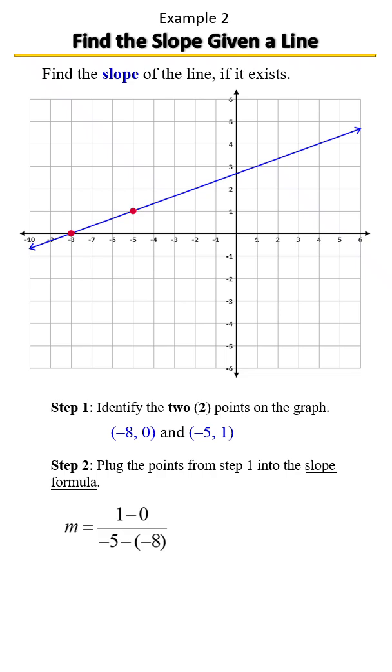Negative 5 combined with a positive 8 is going to give us a positive 3, and that's going to give us a slope of one-third.